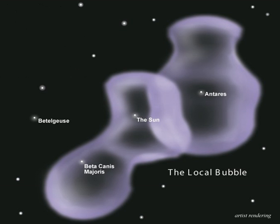The solar system has been traveling through the region currently occupied by the local bubble for the last 5 to 10 million years. Its current location lies in the local interstellar cloud, a minor region of denser material within the bubble. The LIC formed where the local bubble and the loop-I bubble met. The gas within the LIC has a density of approximately 0.3 atoms per cc.